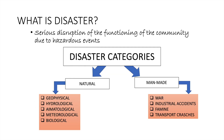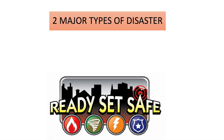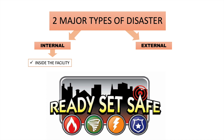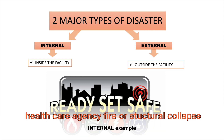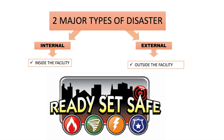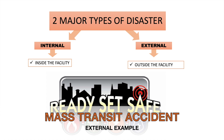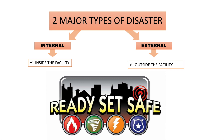Let's discuss the two major types of disaster: internal and external. Internal disaster happens inside the facility — it occurs within the healthcare agency. External disaster occurs outside the facility or outside the healthcare agency. An example of an internal disaster is a healthcare agency fire, structural collapse, or radiation spill. An example of an external disaster is a mass transit accident that could send hundreds of victims to the emergency department.